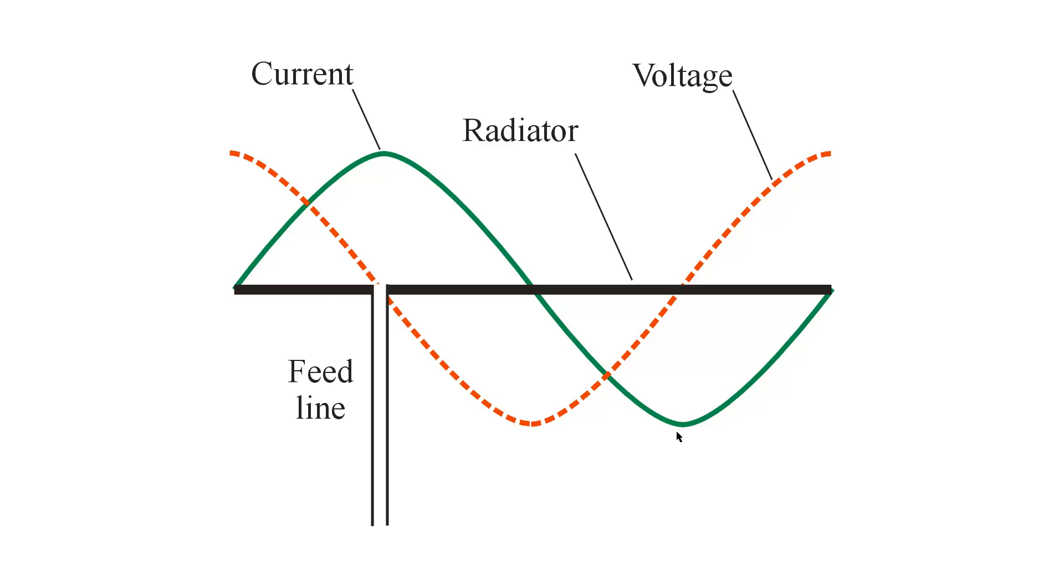But nowhere else in this antenna would you have true current feed. Current feed is always attended by a relatively low impedance at the feed point, and purely resistive.